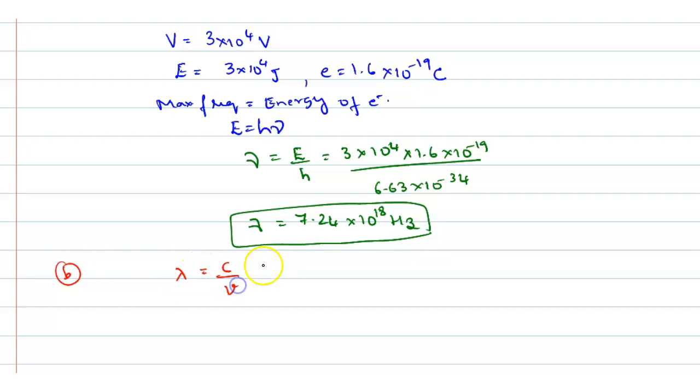Lambda will be equal to C by nu. So this will be equal to 3 into, sorry, C by nu. Nu is equal to C lambda. Lambda is equal to C by nu. So 3 into 10 power 8 divided by nu is 7.24 into 10 power 18. So lambda wavelength you will get it as 4.14 into 10 power minus 11 meter or in Armstrong if you are writing it. This has to reduce now. So lambda becomes 0.41 Armstrong is the wavelength, minimum wavelength of the electron.